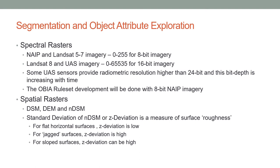Segmentation and object attribute exploration is a very important precursor activity before you start developing your interpretation key and rule sets. You have to focus first on the characteristics of the sensors and the data being produced. If you have spectral rasters like NAIP imagery or Landsat imagery, it is 8-bit imagery and the digital numbers will have a range from 0 to 255. However, Landsat 8 and UAS imagery can have sensors producing 16-bit imagery, and some UAS cameras now deliver 24-bit imagery. The OBI rule-set development for the Lab 5 activity will be done with 8-bit NAIP imagery.